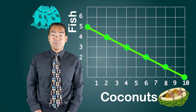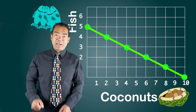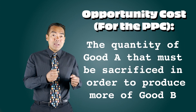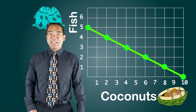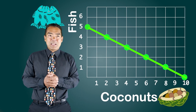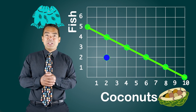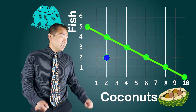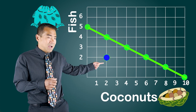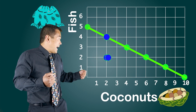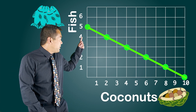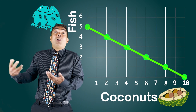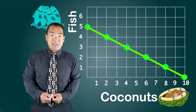But what does opportunity cost mean in the context of the production possibilities curve? In the case of the PPC, we're going to define opportunity cost as the quantity of good A that must be sacrificed in order to produce more of good B. If we're producing inside the production possibilities frontier — say two fish and two coconuts — then the idea of opportunity cost isn't really relevant. We know that I could get two more fish without having to give up any coconuts, or get four more coconuts without having to give up any more fish.